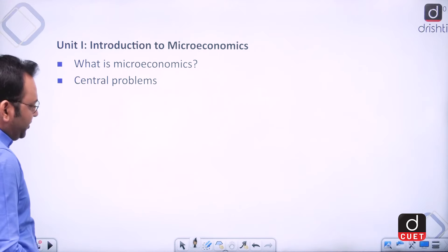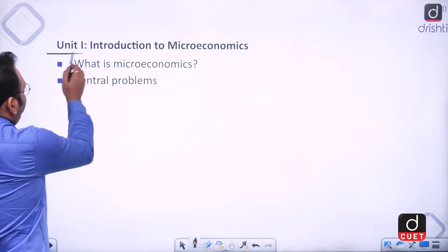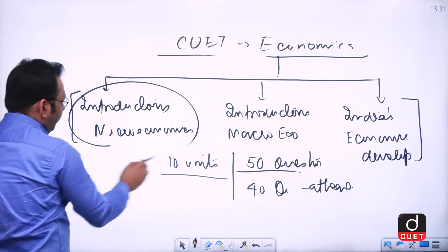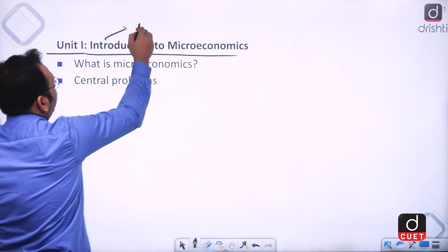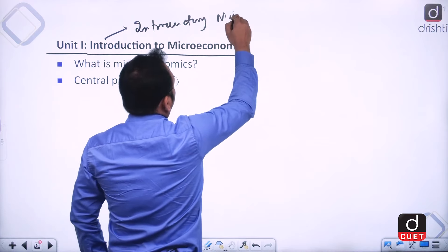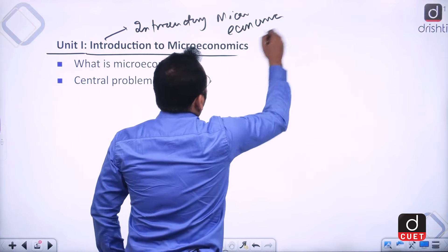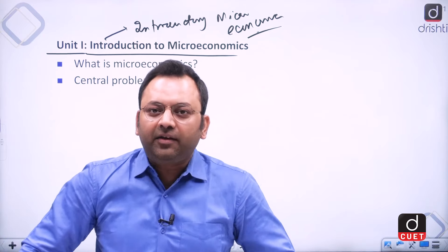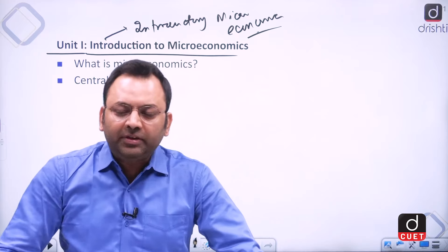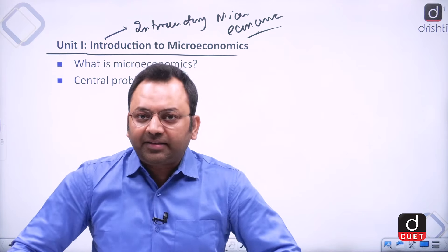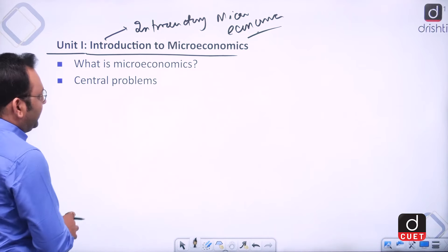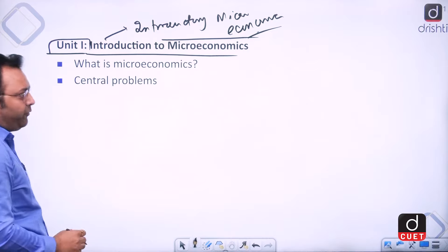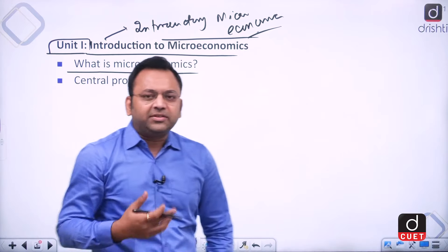The first unit is the introduction to microeconomics, which is the first part of the syllabus. All the chapters and units are from the class 11th and 12th NCERT. If we are thorough with the NCERT content, we are easily able to crack the exam.